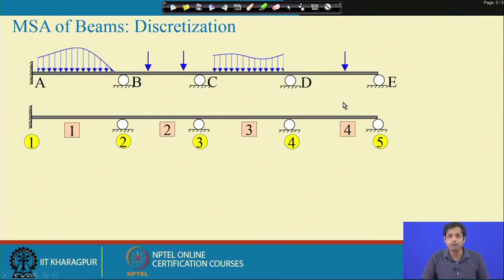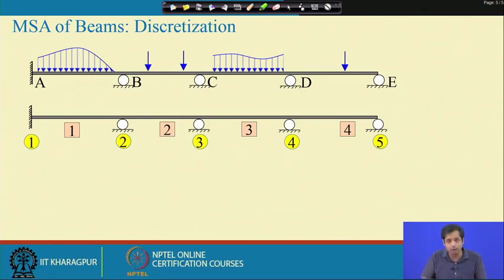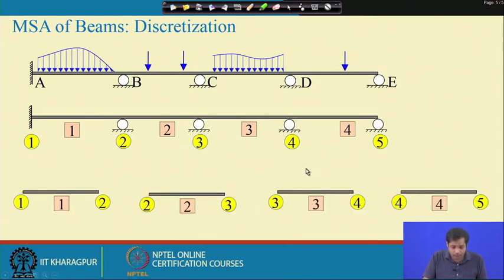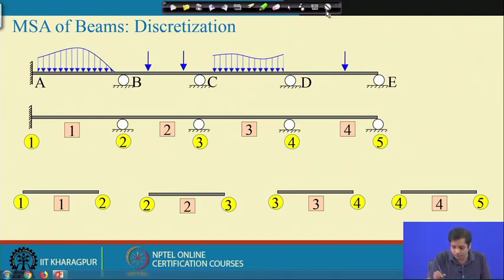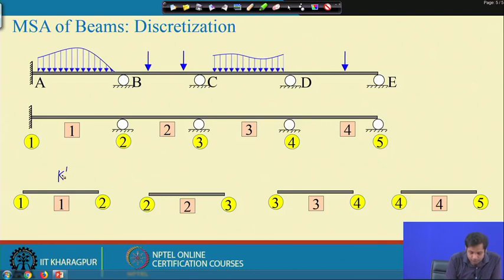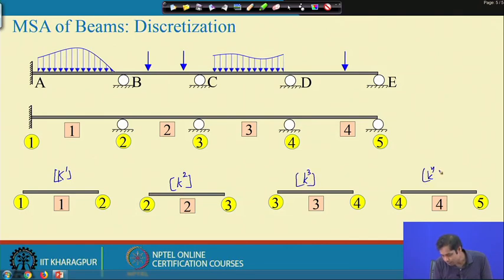Depending on the structure we can have different numbers of members and joints. In this problem we have 4 members. Let us isolate all 4 members. Connectivity is very important: member 1 connects node 1 and 2, member 3 connects node 3 and 4, and member 4 connects node 4 and 5. Once we have that, we have to write the stiffness matrix for each member — k1, k2, k3, k4, and so on.